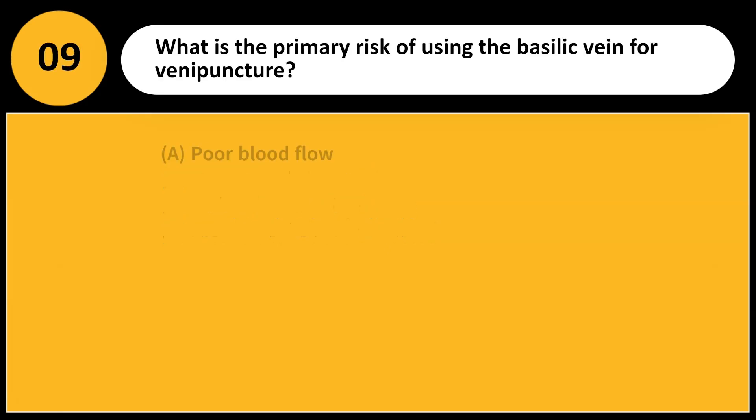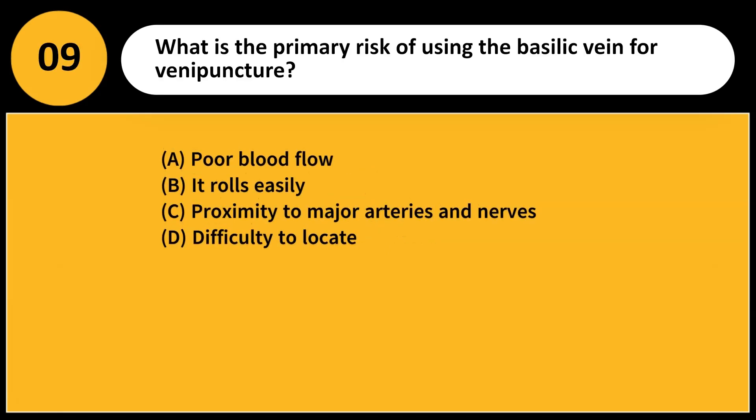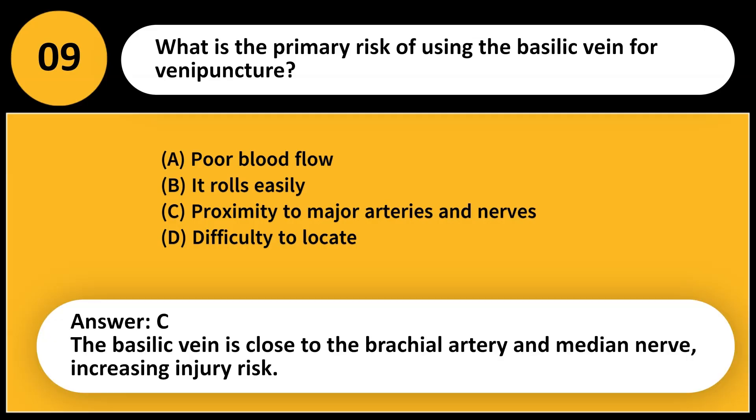What is the primary risk of using the basilic vein for venipuncture? A. Poor blood flow. B. It rolls easily. C. Proximity to major arteries and nerves. D. Difficulty to locate. Answer: C. The basilic vein is close to the brachial artery and median nerve, increasing injury risk.